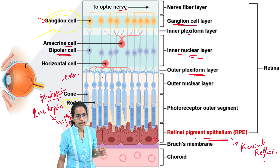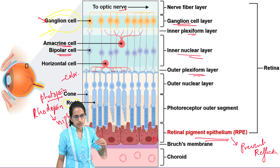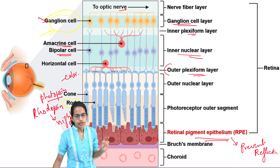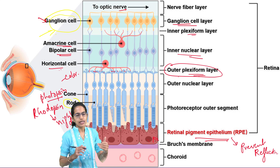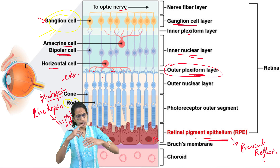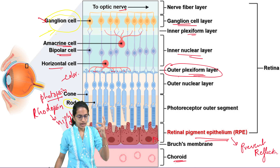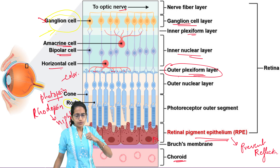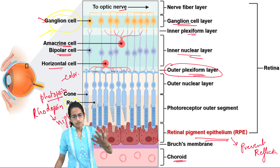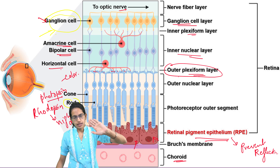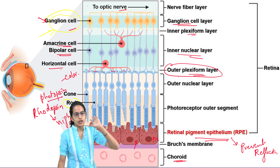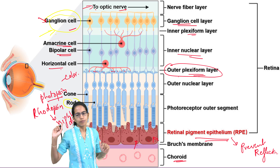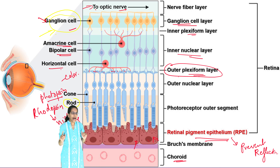Now within the retina, within the inner nuclear layer, you have the amacrine cells and the bipolar cells which are present. Now amacrine cells are important because they actually make a synaptic contact between the dendrites of the ganglion cells and the bipolar cells. Now ganglion cells together form the ganglionic cell layer. Ganglion cells actually give rise to the optic nerve impulse which goes to the brain. So ganglion cells within the ganglionic cell layer send the signal to the optic nerve and finally to the brain.